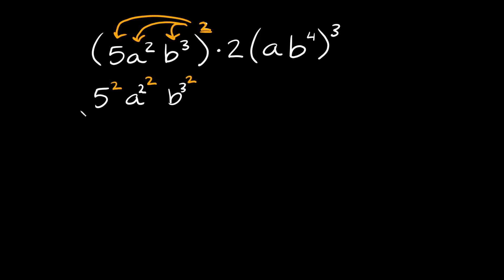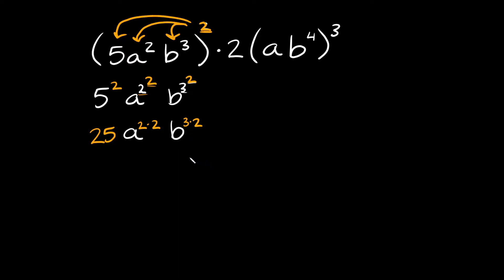Now we can simplify. 5 squared is the same thing as 5 times 5, which is just 25. Then here we have a squared raised to the second power. How do you raise a power to a power? You simply multiply the two exponents together. So here we're going to have a raised to the 2 times 2, which gives us a to the 4th power.